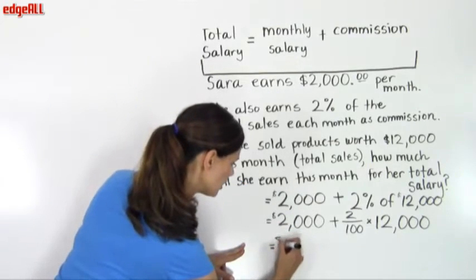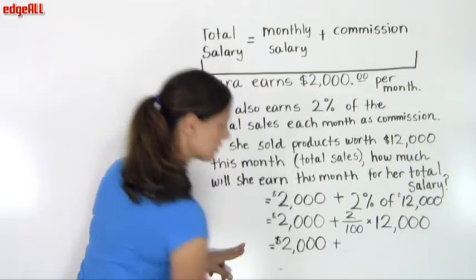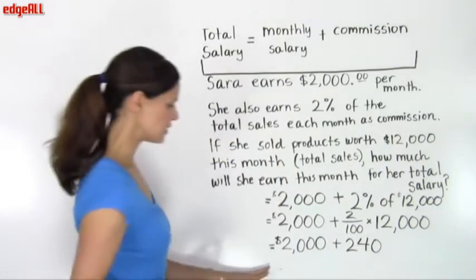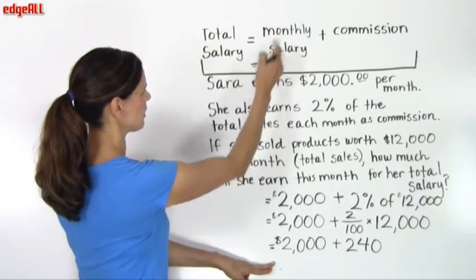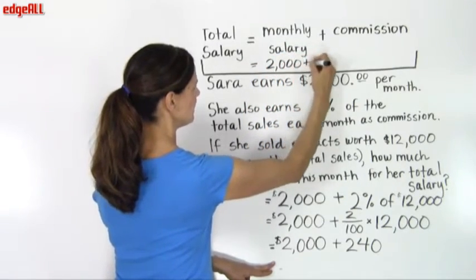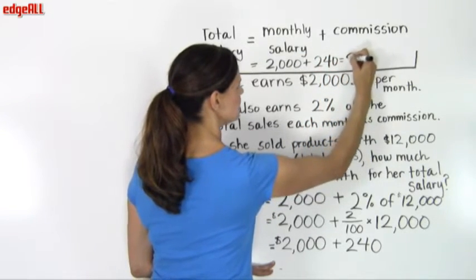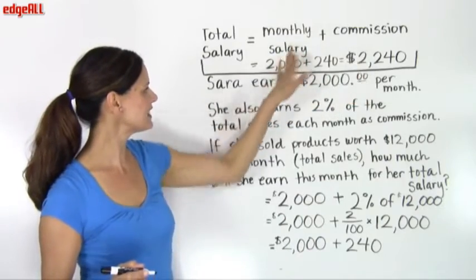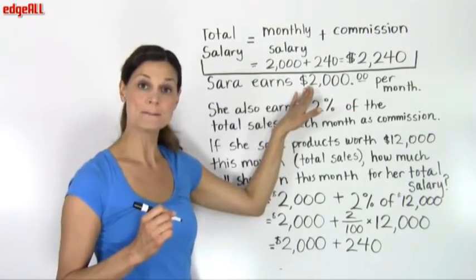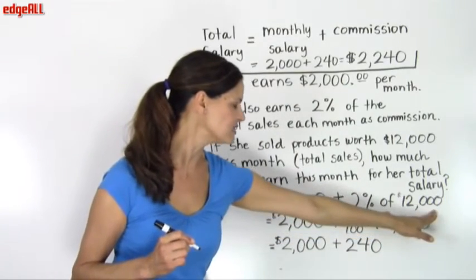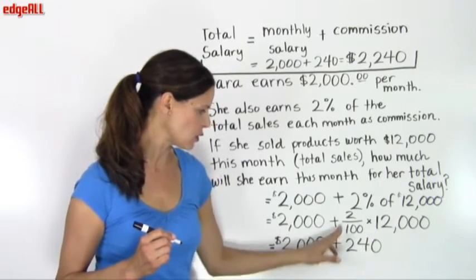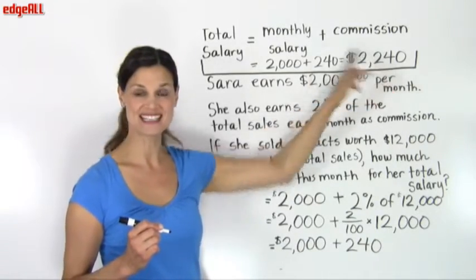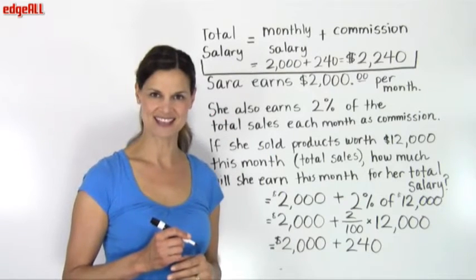Sarah will earn the $2,000 of her basic salary plus 2% of 12,000, which is 240 dollars. She will earn this month a total of $2,240. That's her basic monthly salary of $2,000 per month, plus 2% of 12,000, which is 0.02 times 12,000 to equal 240, which gets added to her basic salary of $2,000, and she earns a total of $2,240.